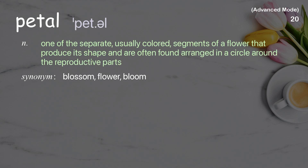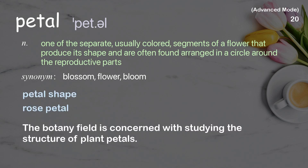Petal: one of the separate, usually colored, segments of a flower that produce its shape and are often found arranged in a circle around the reproductive parts. The botany field is concerned with studying the structure of plant petals.